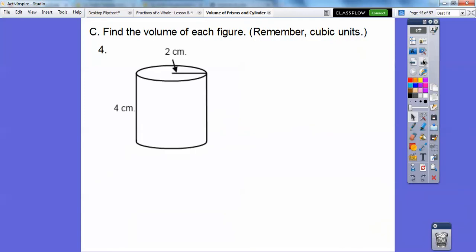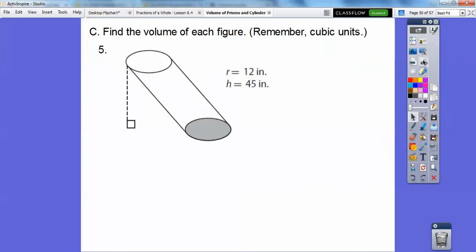So base times height, here it's πr² times height, where r is 2. So go ahead and put it together, and we get 16π centimeters cubed, about 50.27.